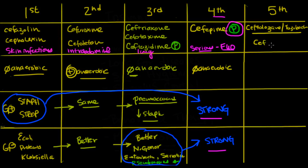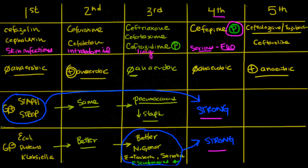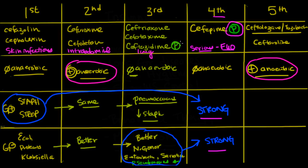The other fifth generation agent is ceftaroline. These are very different fifth generation cephalosporins. Notably, for the second time we have good anaerobic coverage — it's really just the second generation and the fifth generation that have anaerobic coverage. Ceftolazane-tazobactam was developed by taking the ceftazidime structure and making it better, so it is actually the most potent anti-pseudomonal cephalosporin currently available, with tazobactam added as a beta-lactamase inhibitor — making it a super anti-pseudomonal.